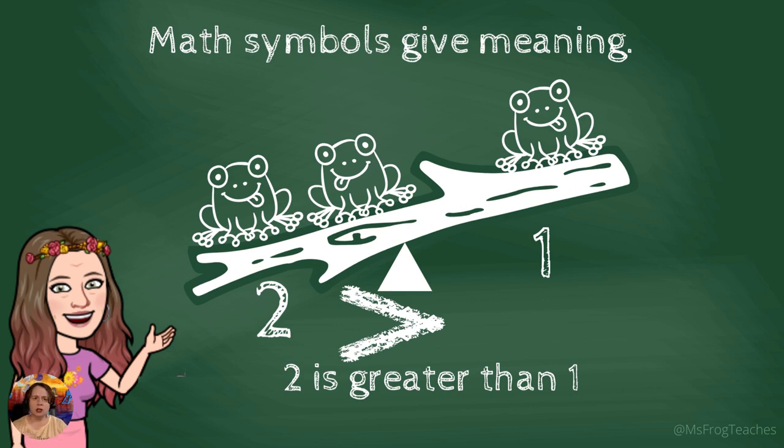Let's say that they all hop around on the log and change position, and now we've got two frogs on one side and one frog on the other. Well, two is greater than one.